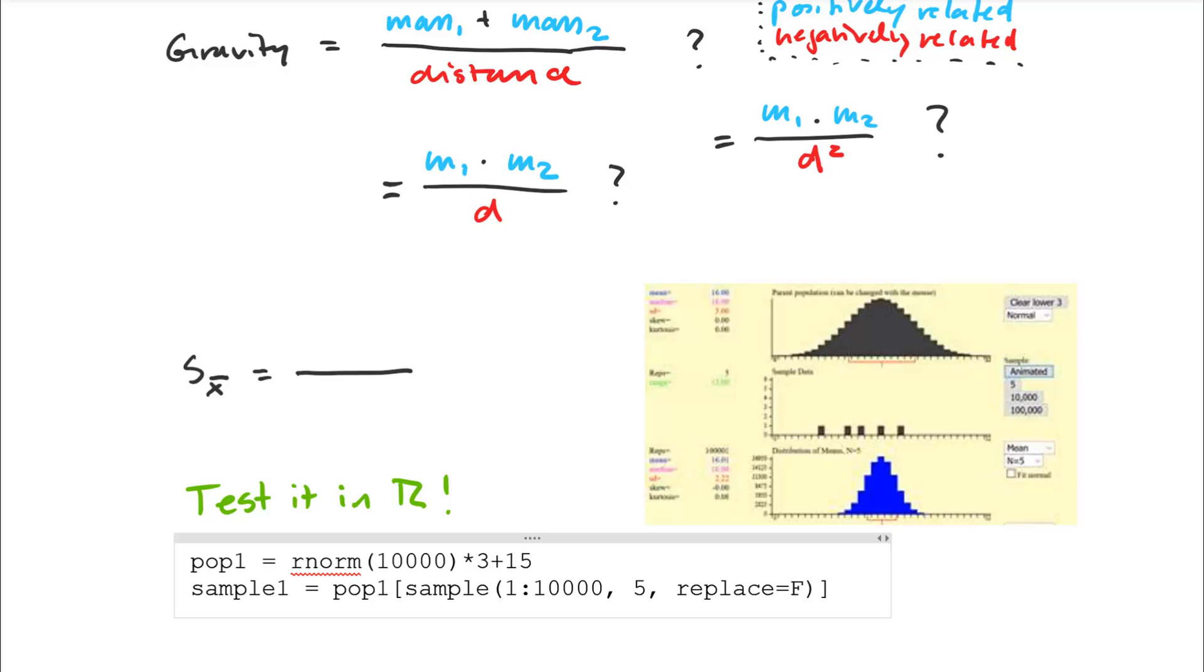So my thinking would go as follows. I would put the standard deviation of the original population in the numerator, because the wider that is, the wider the population of my means is probably going to be. And I would put the sample size here that we picked, I would put that in the denominator.